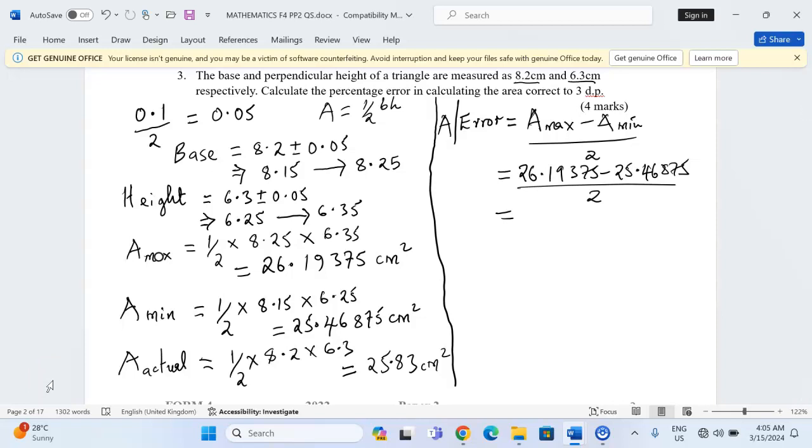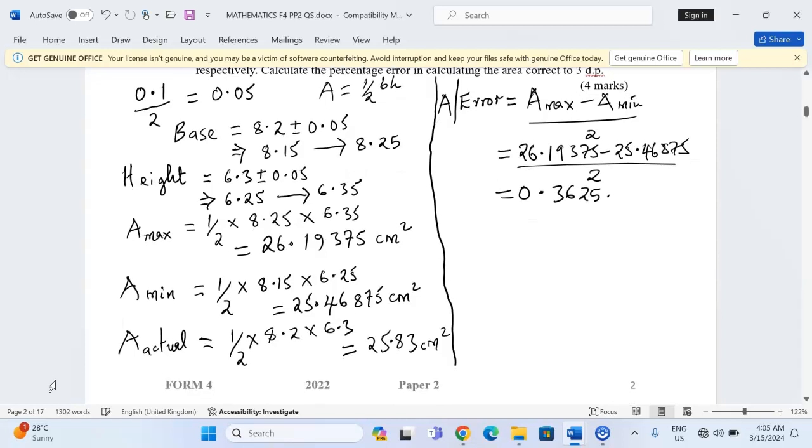26.19375 minus 25.46875, 0.725 divided by 2. I'm getting 0.3625. That is the absolute error.